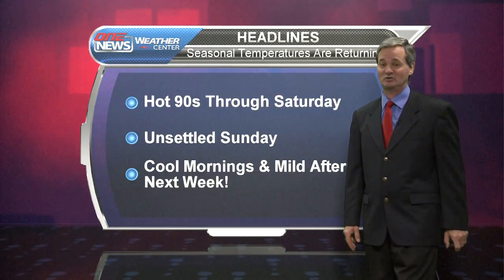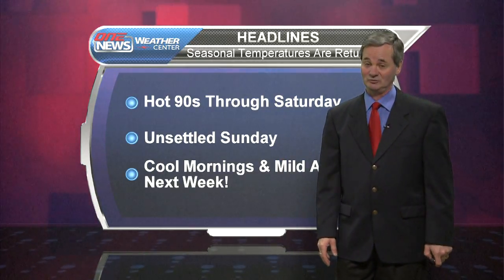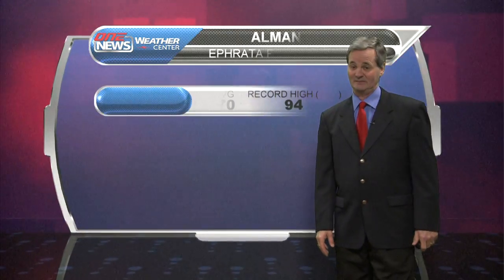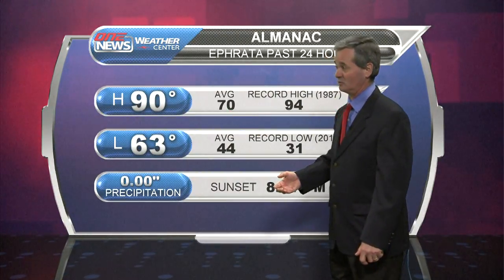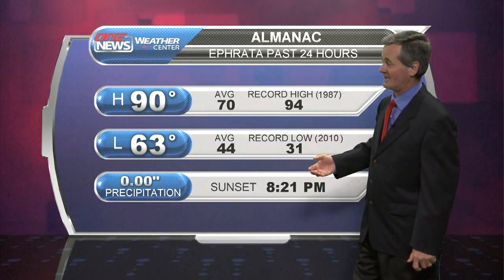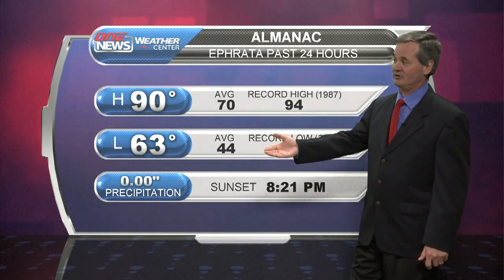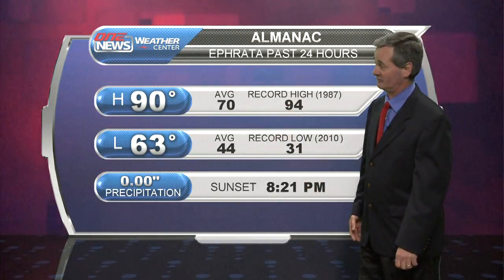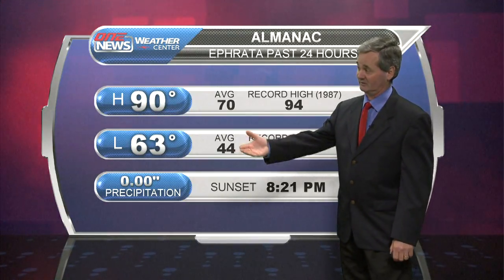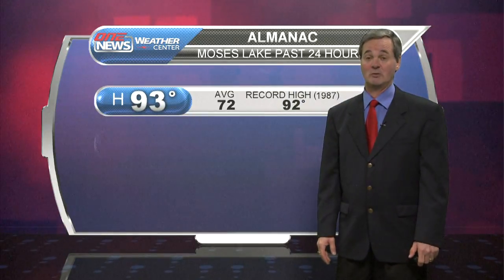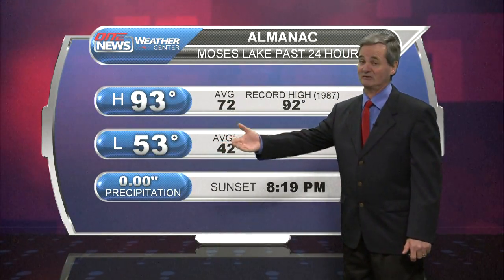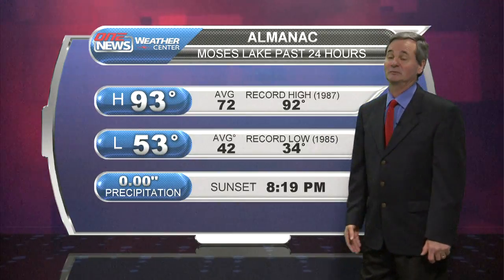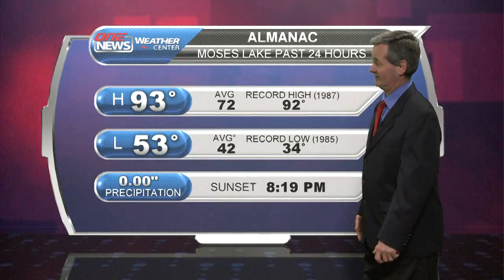We're looking forward to cool mornings and mild seasonal afternoons next week, but again today it was a hot one — 90 degrees this afternoon after a morning low of 63. A mild start, way above the normals, almost 20 degrees above normal on both ends — very hot temperatures for this time of year. In Moses Lake, a similar story: 93 and 53, a little cooler comfortable morning there in the Moses Lake area.